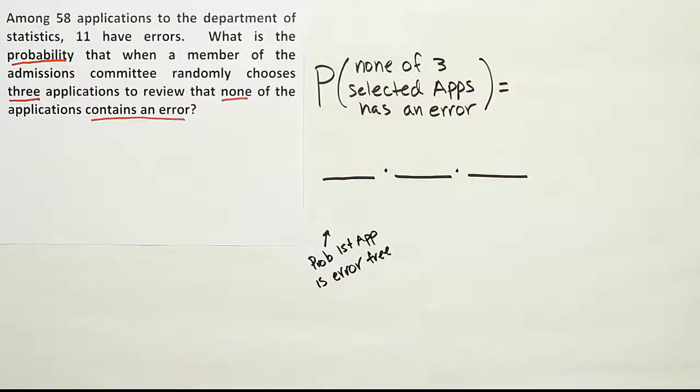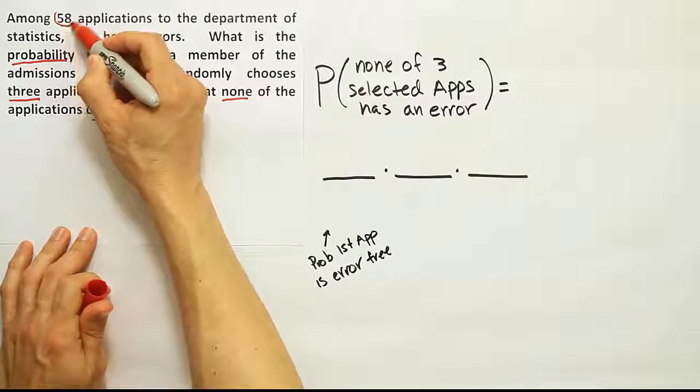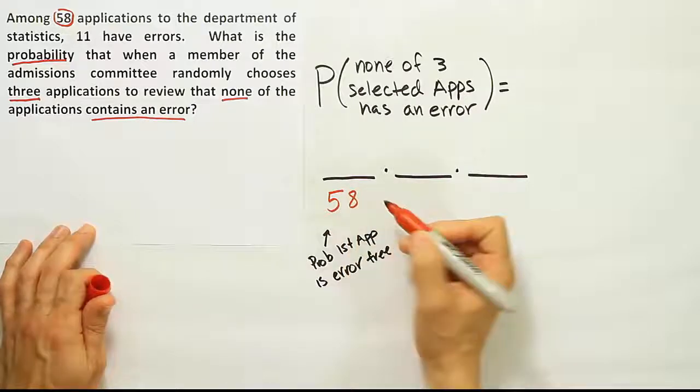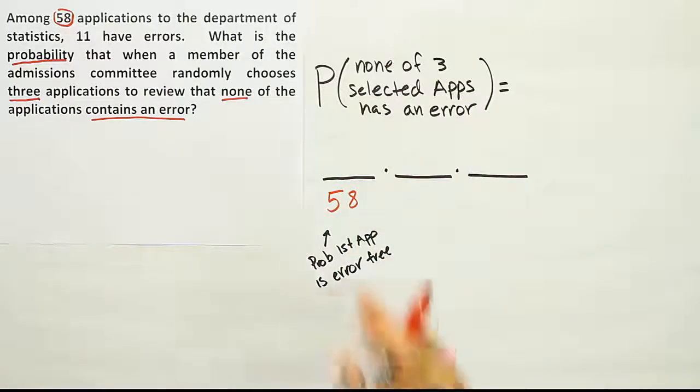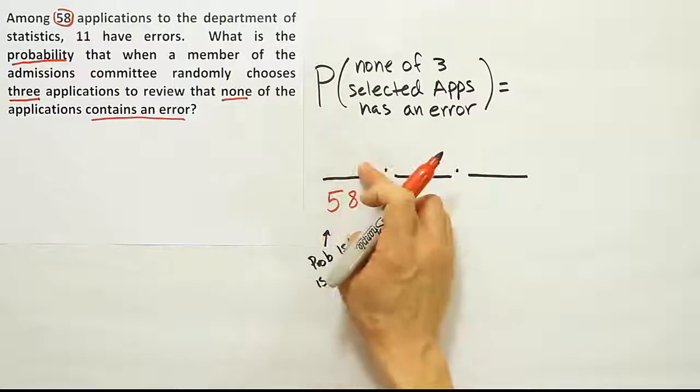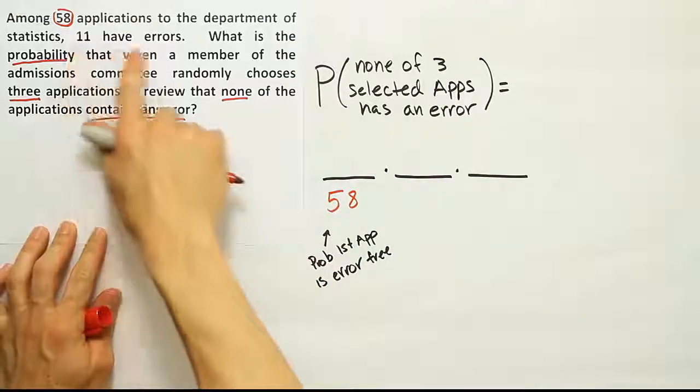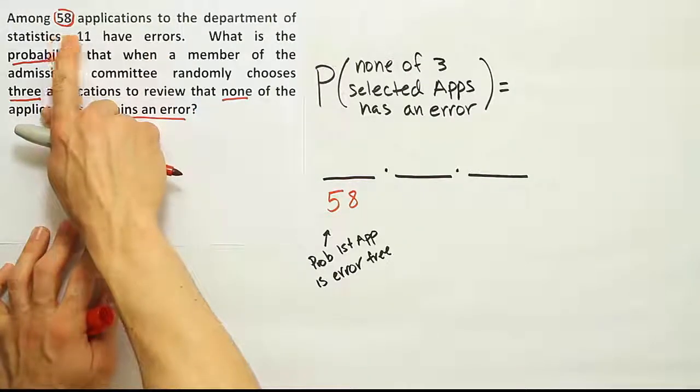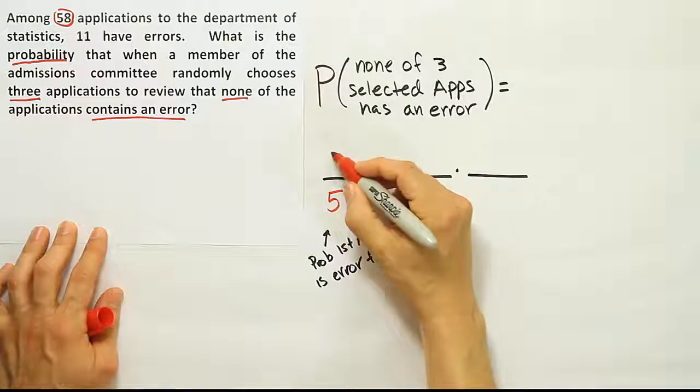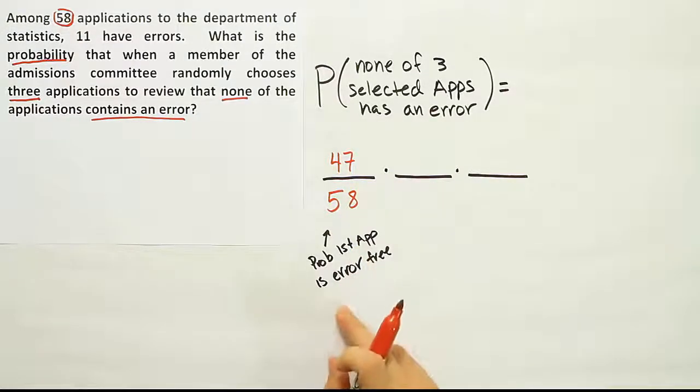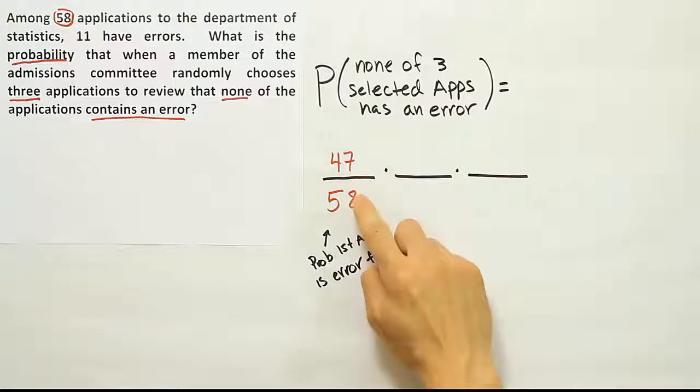I can read here in the problem that there are a total of 58 applications, so I know that this should be 58. Now I need to figure out how many of those applications are error free. It says 11 of them have errors, so if you take 11 from 58, you get 47. So 47 out of 58 is the probability that my first application selected is error free.